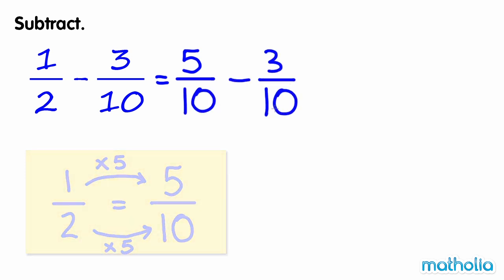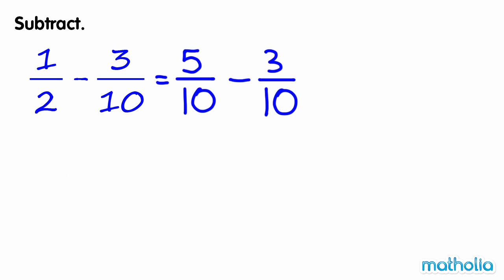The fractions are now like fractions, so we can subtract the numerators. 5 minus 3 equals 2, so 5 tenths minus 3 tenths equals 2 tenths.